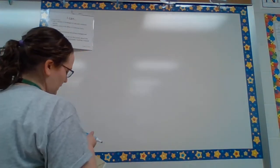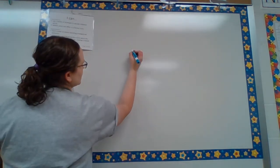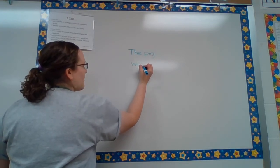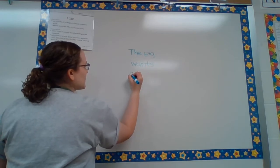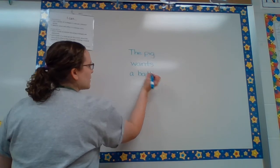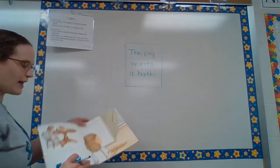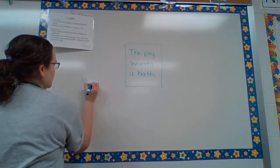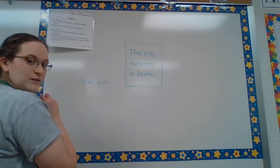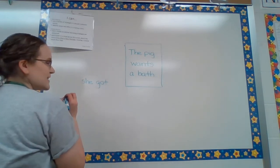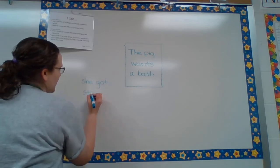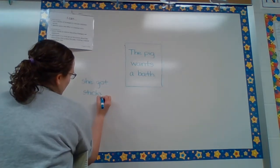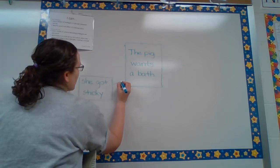Let's take a little pause here and look at our multi-flow map. We look at a big event, so right now we're going to say the pig wants a bath. I want you to think about what happened earlier in the story that made her want that bath. Right before, she got sticky. Just like we used that strategy to sound out the word to read it, we can use it for writing it too. S-T-I-C-K-Y. She got sticky — that's something that caused her to want a bath.